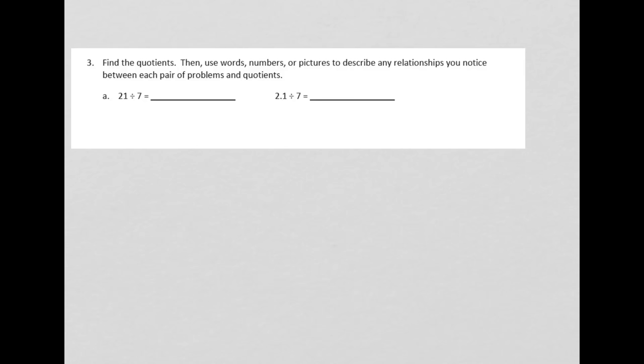Here's problem 3, 3a. It says, find the quotients, then use words, numbers, or pictures to describe any relationships you notice between each pair of problems and quotients. That's a lot of language, isn't it? Well, let's break this up. First thing we need to do is find the quotients. Quotient is a very important math word. It means the answer to a division problem. So, if we are finding the quotient, we are solving a division problem and finding the answer. Then it says, then use words, numbers, or pictures to describe any relationships you notice between each pair of problems and quotients. Well, we have to solve them first before we can talk about the relationship between these two equations. An equation is the math word for a number sentence.